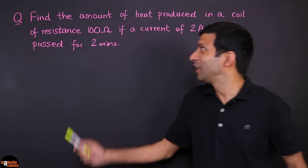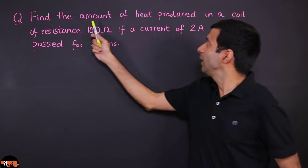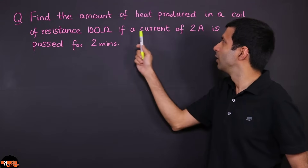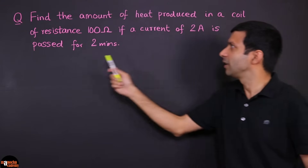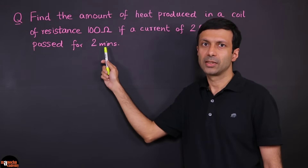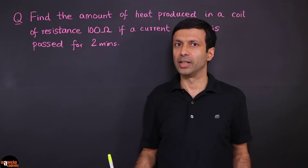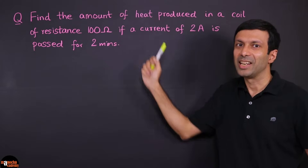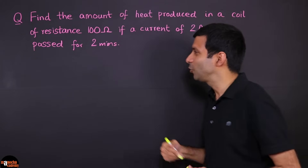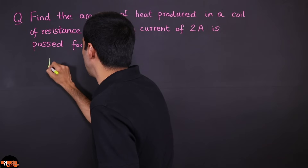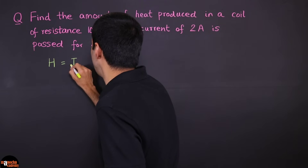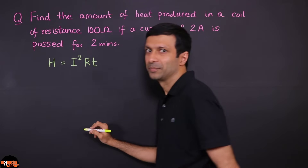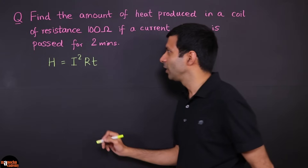Now are you ready for this question? Find the amount of heat produced in a coil of resistance 100 ohm if a current of 2 ampere is passed for 2 minutes. Since we need to find the amount of heat produced, it's Joule's law of heating. We need to use the formula H equals I squared R T.